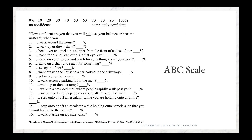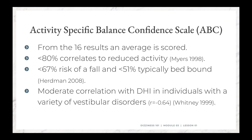They fill it out and we score accordingly — we take the total score and divide by 16 to get our score. If they score less than 80%, that correlates to the perception that their unsteadiness is impacting their ability to do normal daily activities. If they score less than 67%, research has shown these individuals are at increased risk for a fall.